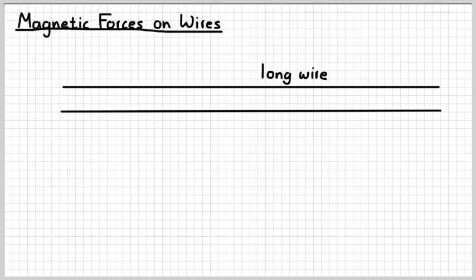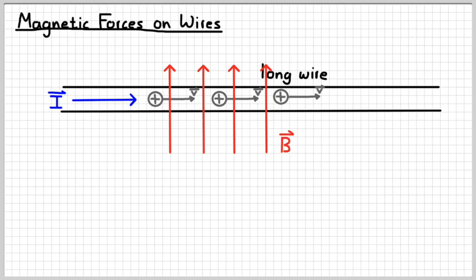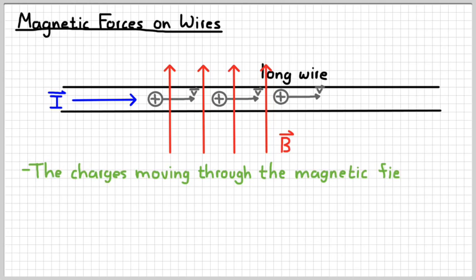So here's a long wire. There's a current moving through it. And there are the charges that are actually moving, and that's what's creating the current. Remember, a current is just a movement of positive charges. And so if we put those charges through a magnetic field, they are going to feel a force due to that magnetic field, because they're moving perpendicular to it.